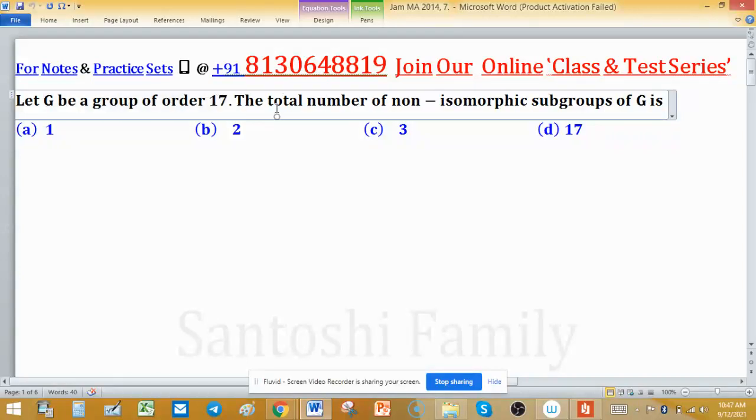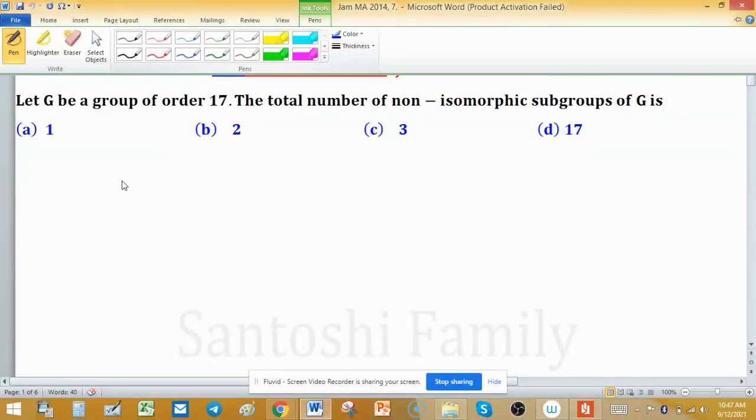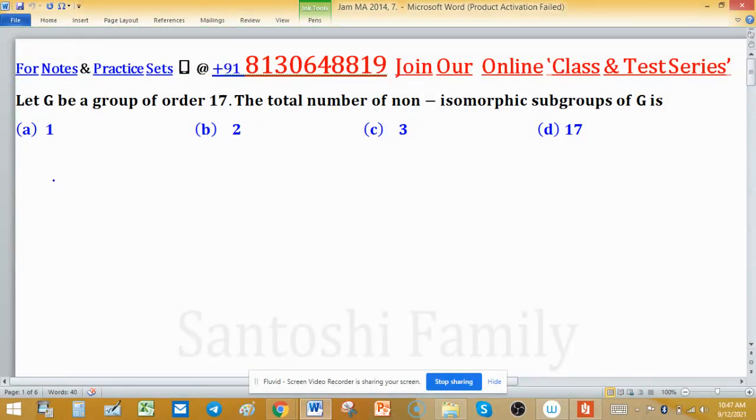Let G be a group of order 17. The total number of non-isomorphic subgroups of G is... To solve this problem, we need to recall one theorem, and that name is Lagrange theorem.